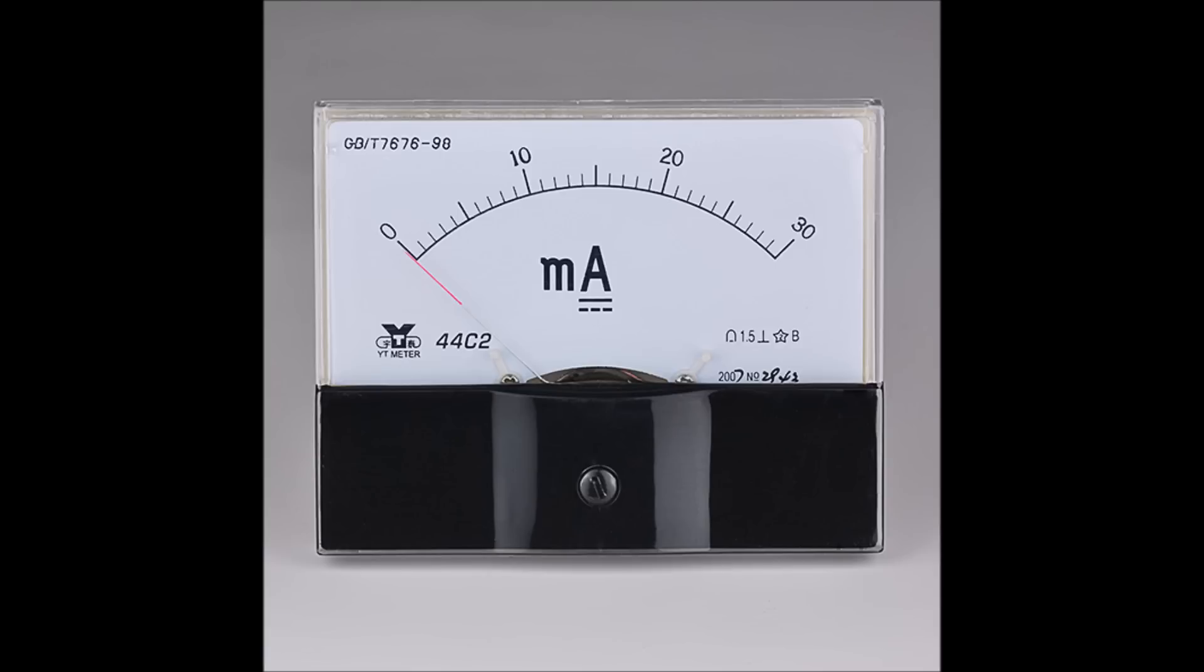Amps can be measured by an ammeter, and I've gotten in trouble for mispronouncing that in the past. I've heard it both ways, but I think the correct way to say it is ammeter, A-M-M-E-T-E-R. I have heard it said ammeter before, but anyways, an ammeter will measure the amps or the current in an electrical flow.